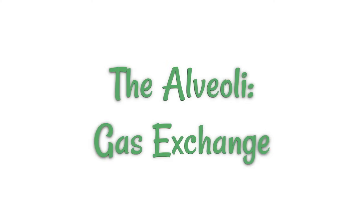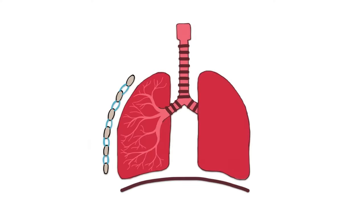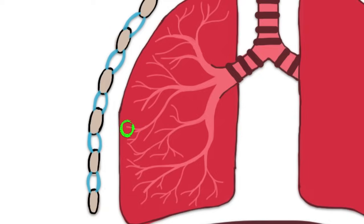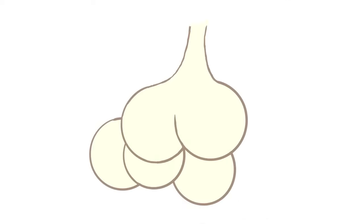The alveoli are the site of gas exchange in the lungs, located at the very end of the bronchioles. They have a structure that's something like this — often described as having a cauliflower shape, but basically they're just tiny little air sacs at the end of the bronchioles.